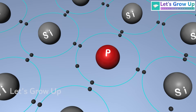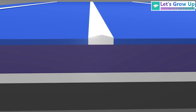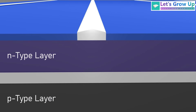Similarly, silicon is mixed with phosphorus, which has one more electron in its outer shell than silicon. When it bonds with silicon atoms, one of its electrons remains unbound, becoming a free electron. This results in an excess of negative charge carriers — electrons — in the semiconductor material, giving it n-type negative conductivity.